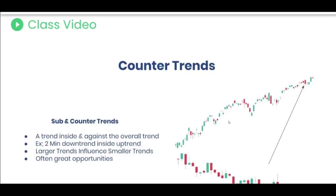You can use these counter trends to find good trading opportunities. If you're in a strong weekly or daily uptrend and you're getting short-term two, five, or fifteen-minute downtrends, and you know overall that you're strong and moving to the upside, you can use those counter trends to find reversals, make entries, and then ride that swing back to the upside. Larger trends influence these smaller trends, and identifying these smaller trends can really be a key to trading success with trends overall.